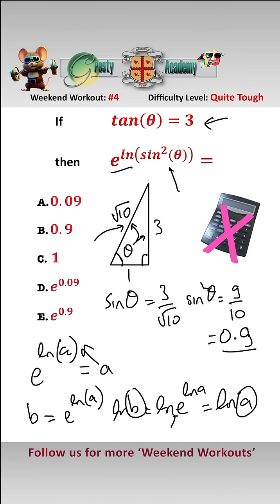So e^ln(a) equals a, and therefore e^ln(sin²θ) equals sin²θ, which we know is 0.9. Therefore the answer is simply 0.9.